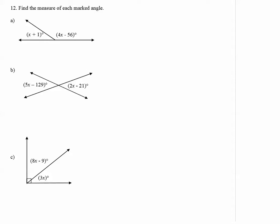For these next few examples, we will look at pictures of angles and try to find the measure of each marked angle. The first diagram shows us a straight line split into two angles. One angle on the left is x plus 1 degrees and the angle on the right is 4x minus 56 degrees.